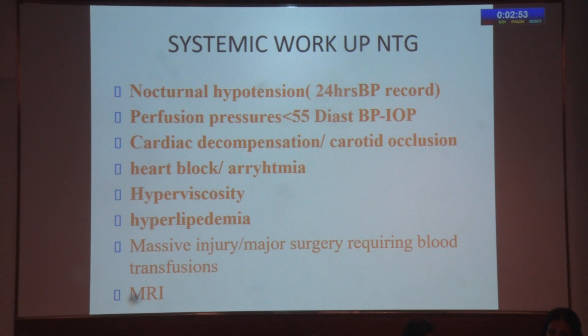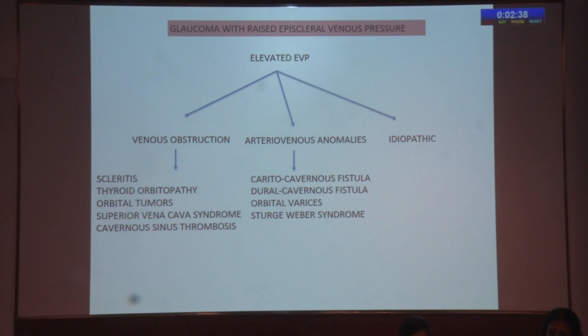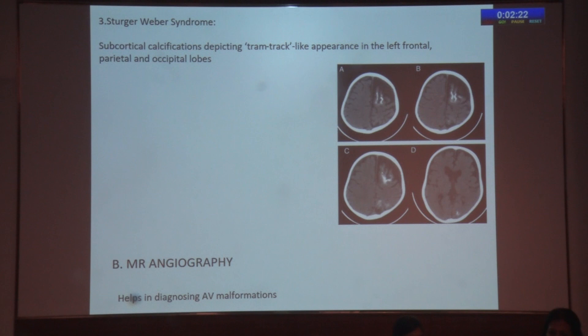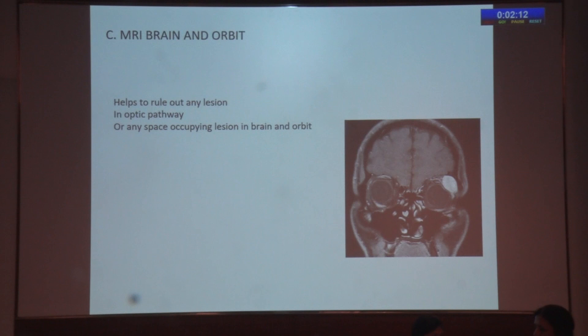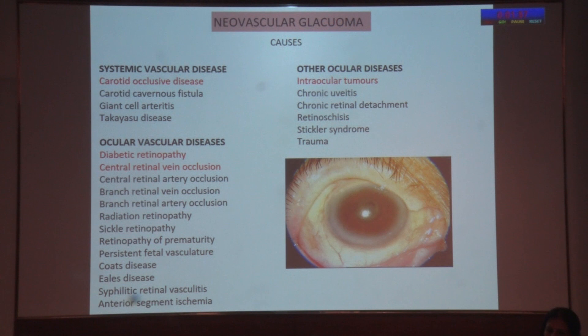MRIs are important — sometimes you find pituitary tumors giving a picture just like glaucoma. If there is increased episcleral venous pressure, it could be related to venous obstruction, AV anomalies, scleritis, thyroid, orbital tumors, superior vena cava syndrome, or carotid-cavernous fistulas. MRI brain and orbit reveals many secrets, especially in systemic diseases like Sturge-Weber syndrome — you can see a tram track, and MR angiography can help diagnose AV malformations that can be life-saving. For neovascular glaucomas, we are increasingly seeing ocular ischemic syndrome when diabetic retinopathy and CRBO are not present — a systemic workup to check carotid occlusive disease is important, as carotid endarterectomy can help.